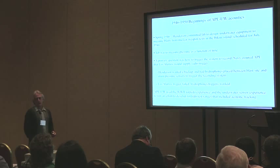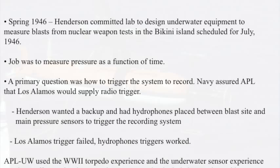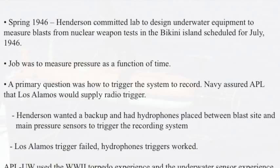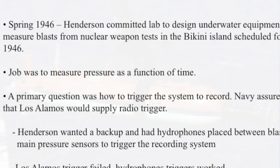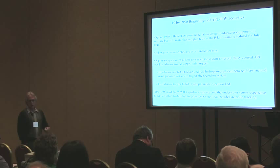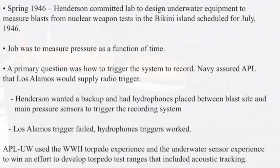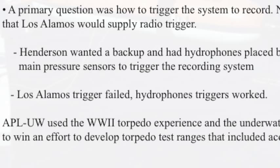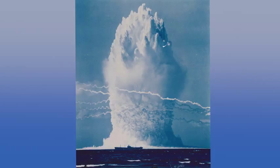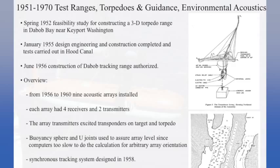He went to DC alone — which was a mistake the associate directors found out — and he committed the lab to design underwater equipment to measure the blasts from the nuclear weapons test in Bikini, scheduled for July. So they had like three months. The job was simply to measure the pressure as a function of time underwater. The primary question was how you were going to trigger the system to record everything. The Navy told Joe, don't worry about it — Los Alamos has you covered, they'll give you a radio trigger. As a lesson for experimentalists: always be paranoid, and Henderson was. He wanted a backup and put hydrophones between the main equipment and the blasts so he would have a secondary triggering system. It turned out the Los Alamos trigger failed, the hydrophones worked, and APL got the data.